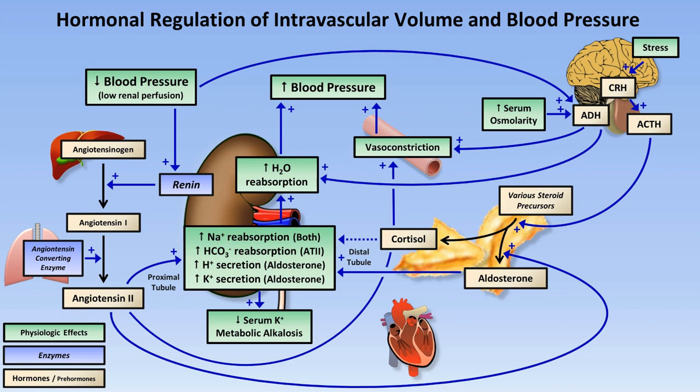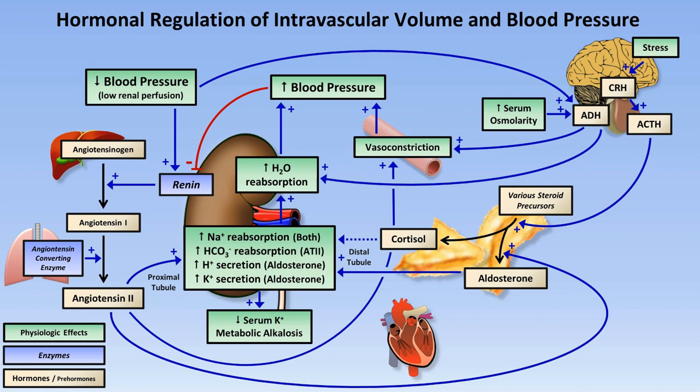Another form of negative feedback is that the increased systemic blood pressure, along with increased intravascular volume, together lead to increased intracardiac pressure. This stimulates the heart to release ANP and BNP, and ANP and BNP block many of the actions of the RAA system in the kidneys, as well as induce vasodilation.